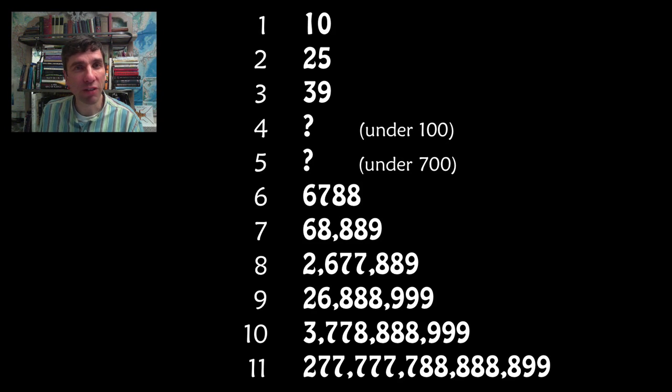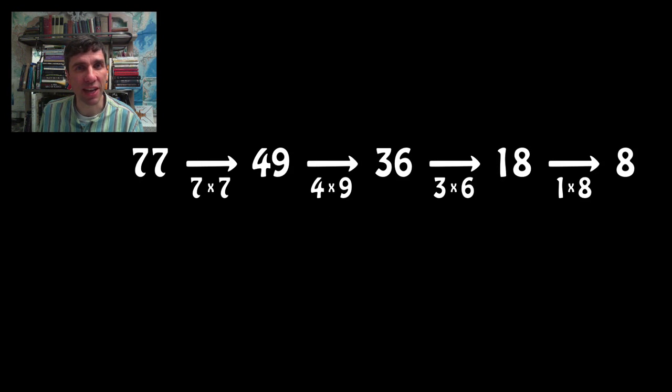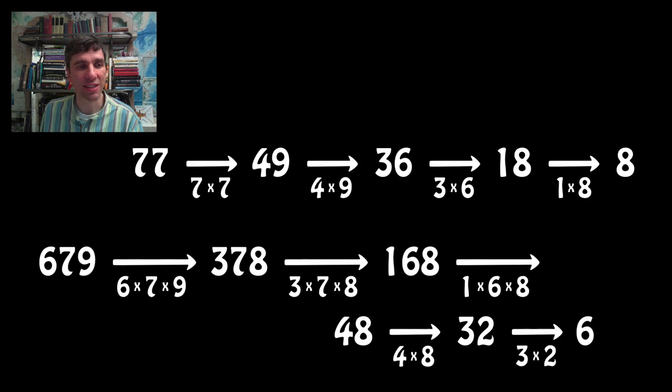Are you ready for the two answers for 4 and 5? Here they are. The lowest number that has a multiplicative persistence of 4 is 77. There's the answer. The lowest number that has a multiplicative persistence of 5 is 679. There it is.